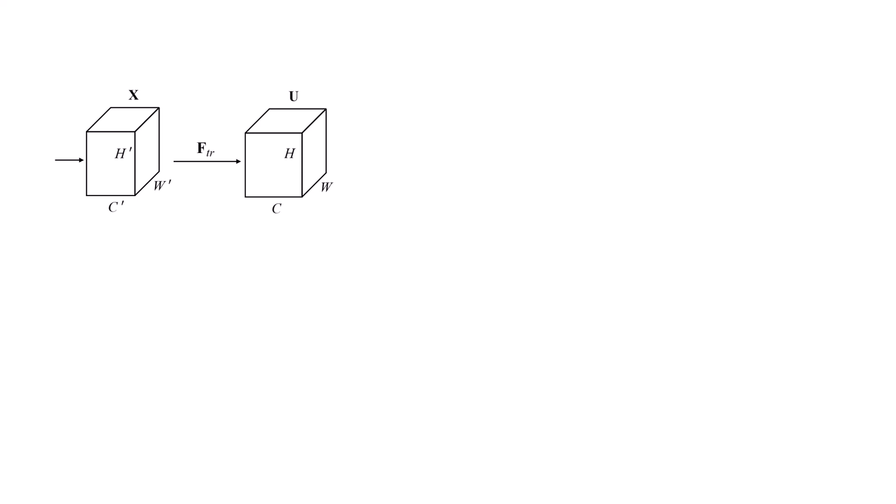For our intermediate feature volume, for every channel, we have H times W entries. But ultimately, to know that one channel is more important than the other one, we just need a coefficient value. So, they performed a squeeze operation, which outputs one single value for every channel.